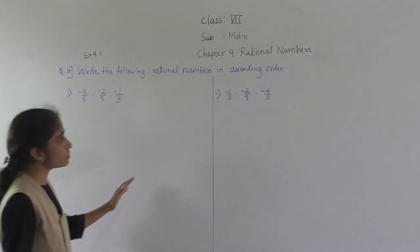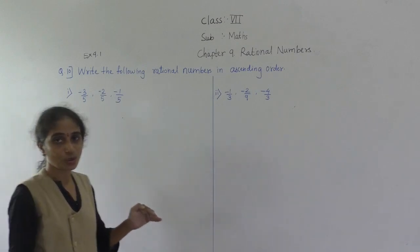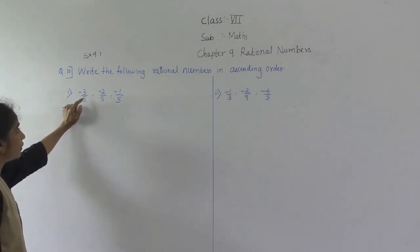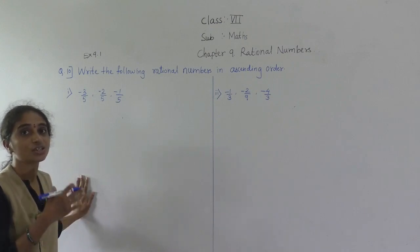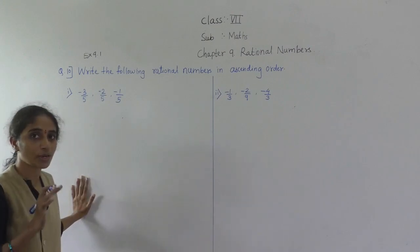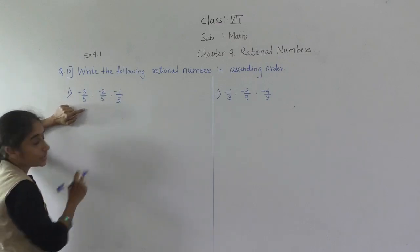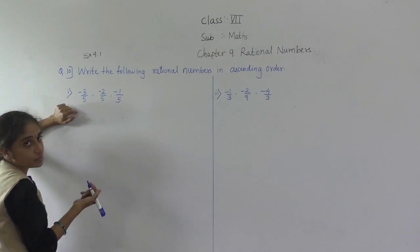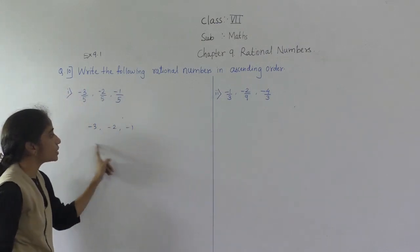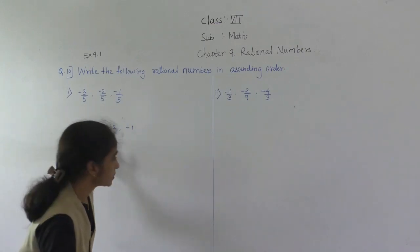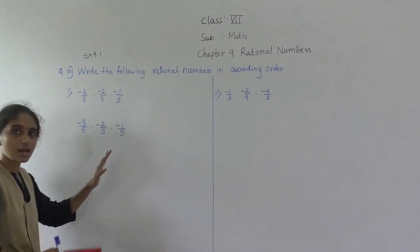Let's solve question number 10: write the following rational numbers in ascending order. Ascending order means small to big. First example: minus 3 upon 5, minus 2 upon 5, and minus 1 upon 5. Denominators are already the same, so compare numerators: minus 3 is the smallest. The ascending order is minus 3 upon 5, minus 2 upon 5, minus 1 upon 5.